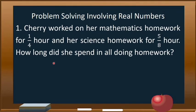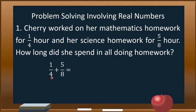We have to add the given fractional parts: the homework for mathematics and the homework for science. So we have 1/4 plus 5/8. But take note that we cannot add these two fractions because they are dissimilar — we have to get the LCD. The denominators are 4 and 8, so the LCD is 8.